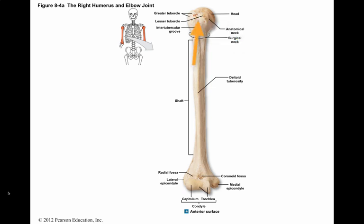The groove between the greater and lesser tubercles is the intertubercular groove, where a large muscle tendon runs through it. Both tubercles are important sites for muscle attachment. The line between the tubercles and the head of the humerus is the anatomical neck, where the joint capsule begins. The narrower, more distal surgical neck corresponds to the metaphysis of the growing bone.